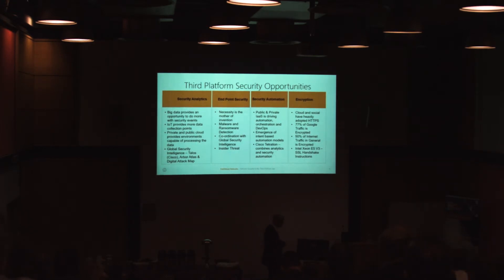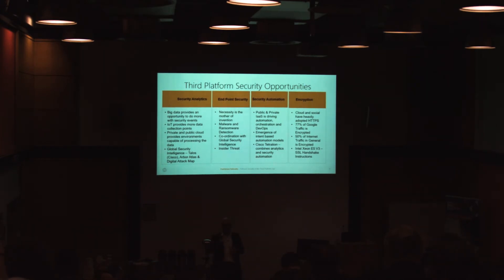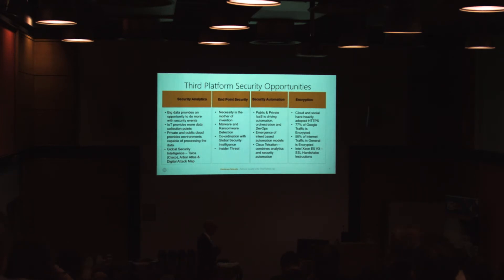Global security intelligence tools — things like Cisco Talos, and Arbor's Digital Attack Map — give you big maps of the world showing ongoing attacks. Digital Attack Map is particularly interesting; on any day you'll see some volumetric DDoS attack going from somewhere in the far east to the western world. Endpoint security is also extremely important and is part of what Eamon was speaking about earlier. Because we can't really see what's going on at the perimeter anymore, you have to be tuned in to what's actually happening at the endpoint.